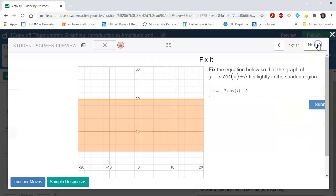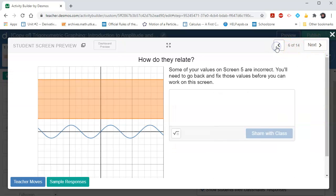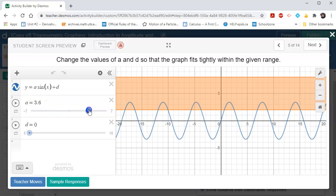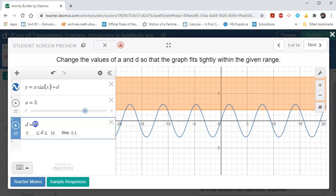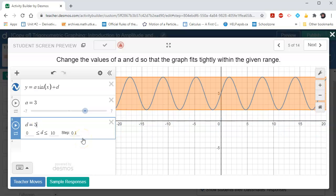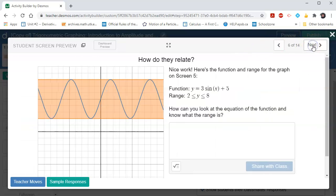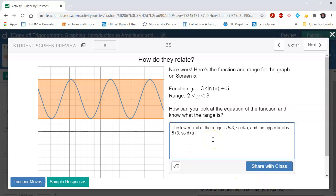Let's preview this. I think it was slide seven. Maybe not. So let's go to slide five. We'll fix this up again. So here's three. And the other thing that students can do, they can just click on the parameter and just type in the value if they want. How can you look at the equation of the function and know what the range is? So now somebody might be liable to type in something that's a little bit more detailed, like the lower limit of the range is five minus three and the upper limit of the range.